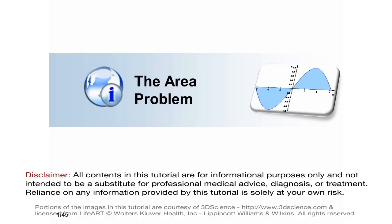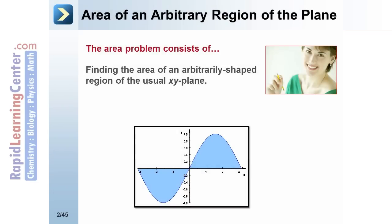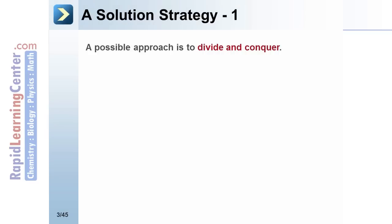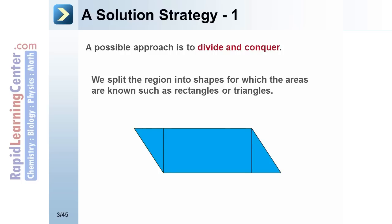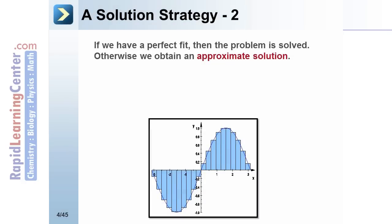The area problem consists of finding the area of an arbitrarily shaped region of the usual XY plane. A possible approach is to divide and conquer: we split the region into shapes for which the areas are known, such as rectangles or triangles, then add the areas. If we have a perfect fit, then the problem is solved.